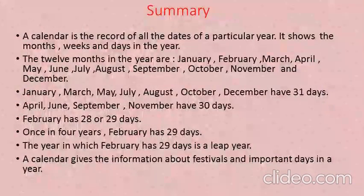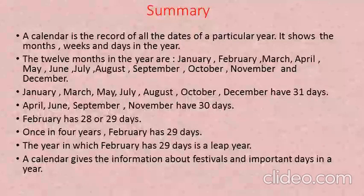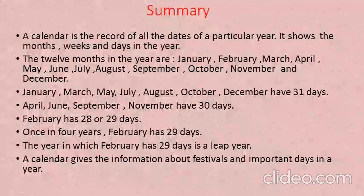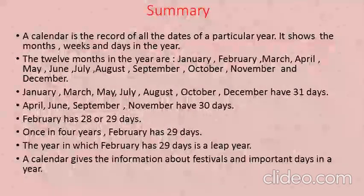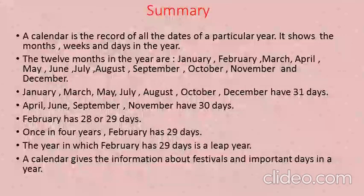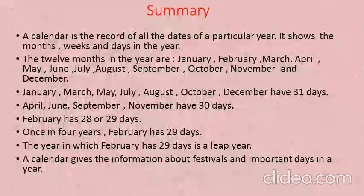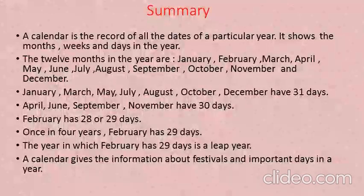Summary — What we have learnt today: A calendar is a record of all the dates of a particular year. It shows the months, weeks and days in a year. The 12 months in a year are January, February, March, April, May, June, July, August, September, October, November and December. January, March, May, July, August, October and December have 31 days. April, June, September and November have 30 days. February has 28 or 29 days. Once in 4 years, February has 29 days — the year in which February has 29 days is a leap year. A calendar also gives information about festivals and important days in our year.